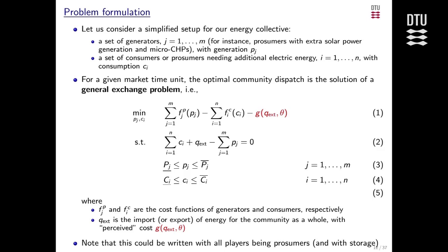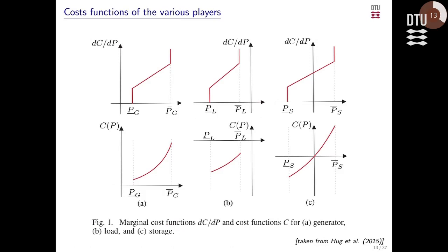These individual cost functions can be everyone on their own, but the collective term g is a function of what all of us have done together — that's what makes it a community. You can generalize that with storage too. In the literature, it's natural to use quadratic cost functions for all players, because then marginal cost functions are linear — which is beautiful for optimization: you slide along linear curves, making negotiation and optimization much easier.